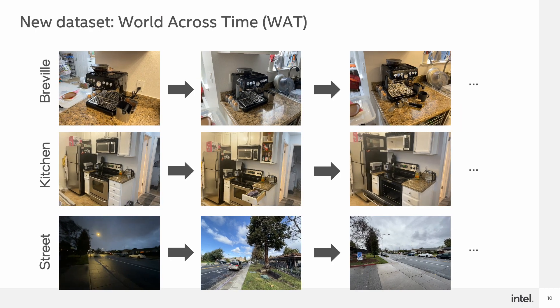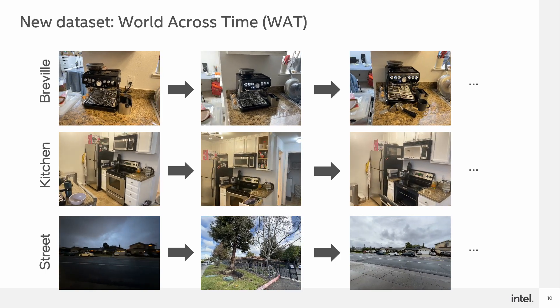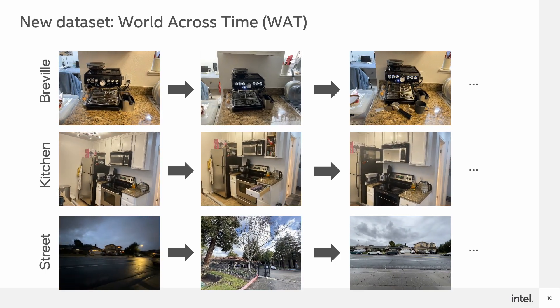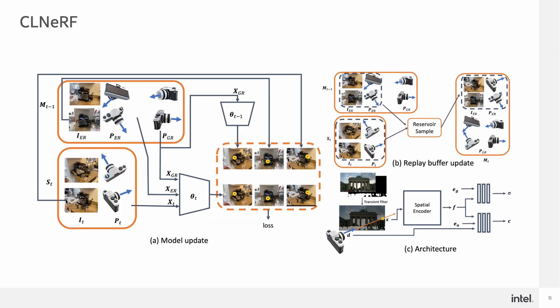To study the problem of continual learning of NeRVs, we propose a new dataset called World Across Time, or WAT. WAT consists of 10 different scenes in both indoor and outdoor environments. Each scene of WAT includes multiple scans where the scene is under different weather, lighting, and geometry conditions. These scans are ordered naturally based on the captured time to form a practical sequential data for continual learning.